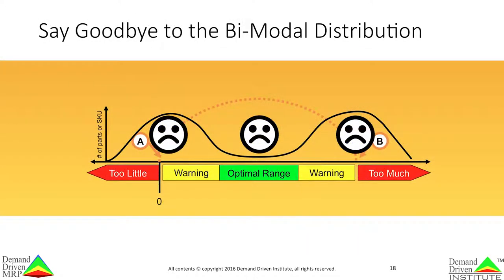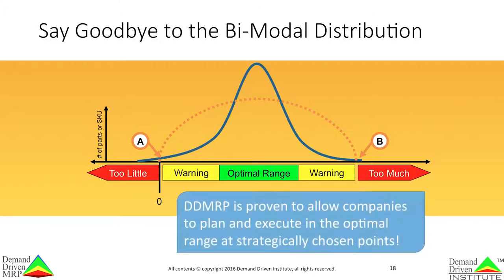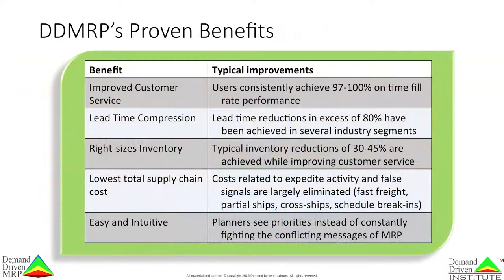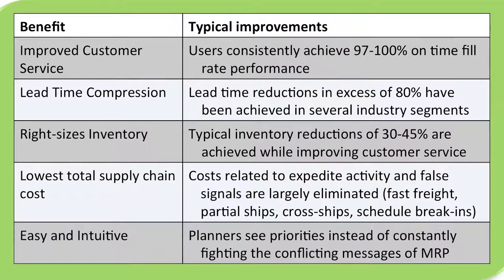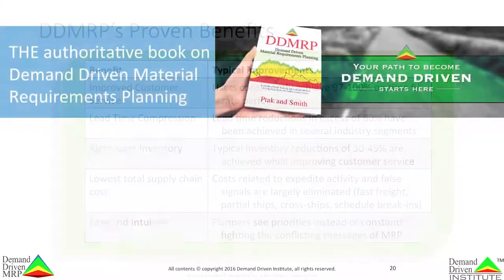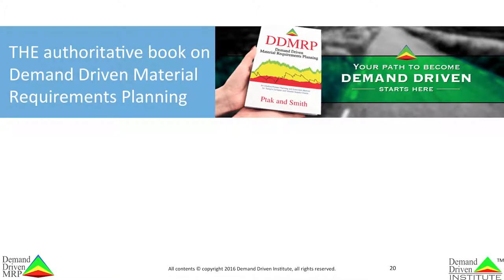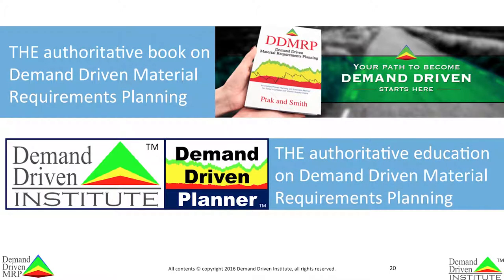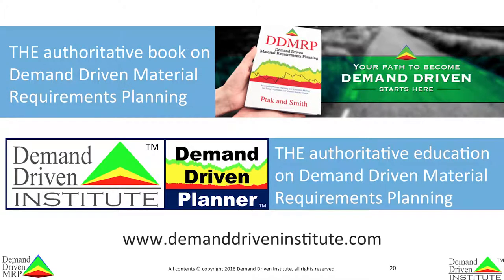And what about that bimodal distribution? You can say goodbye to it. DDMRP is proven to allow companies to plan and execute in the optimal range at strategically chosen points, meaning flow is protected and promoted. The typical benefits of DDMRP are compelling. Users consistently achieve 97% to 100% on-time fill rate performance. Lead time reductions in excess of 80% have been achieved in several industry segments. Typical inventory reductions of 30% to 45% are achieved while improving customer service. Costs related to expedite activity and false signals are largely eliminated. Planners have relevant information and see priorities instead of constantly fighting the conflicting messages of MRP. You can learn more about DDMRP by reading the authoritative work Demand Driven Material Requirements Planning, or by taking the Demand Driven Planner Program, available through affiliates around the world or online. Be sure to visit the case study section of the Demand Driven Institute website to see dozens of case studies on DDMRP.